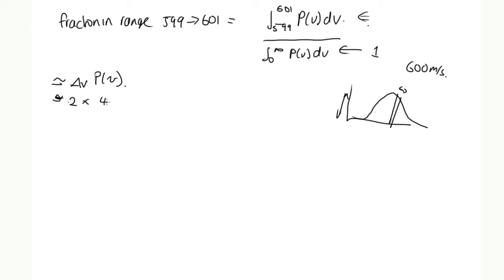And P(v), we were told, was equal to 4π times m over 2πrt to the 3/2 v squared times e to the minus mv squared over 2rt. And so let's just work out what these things are.